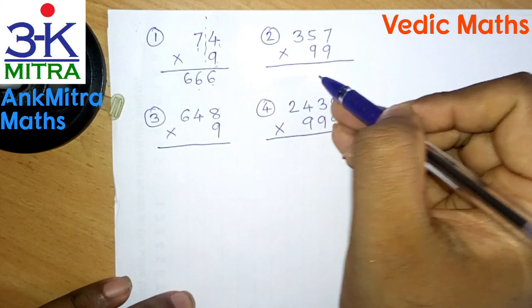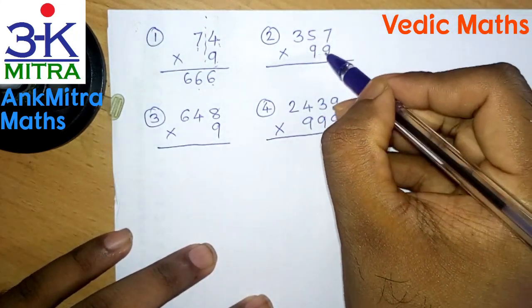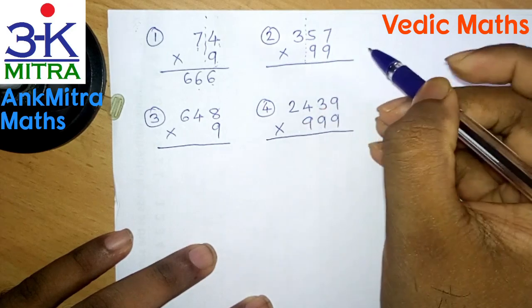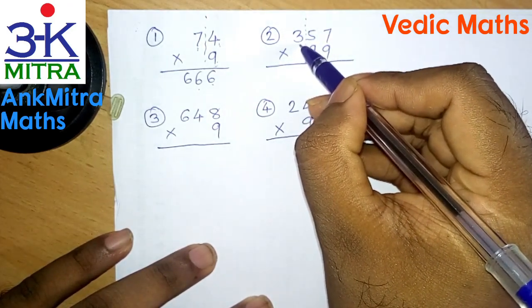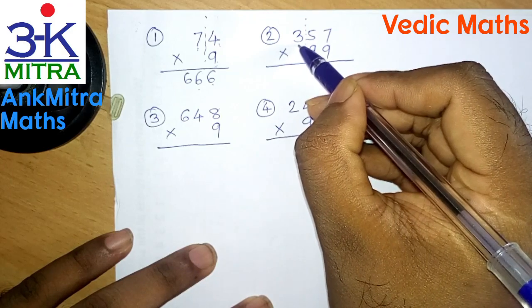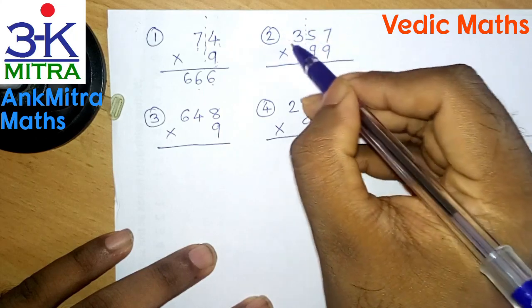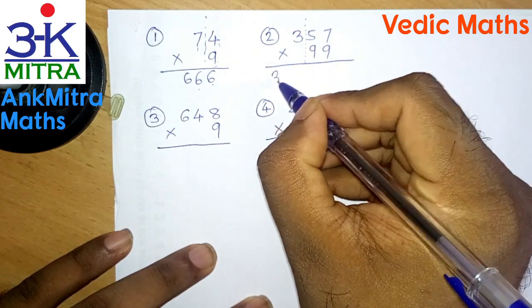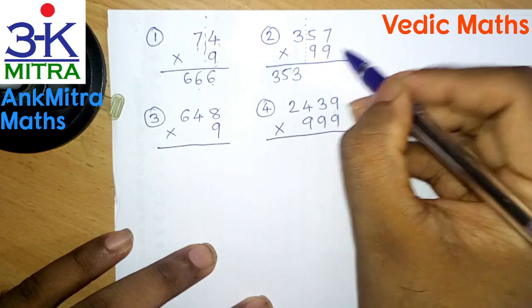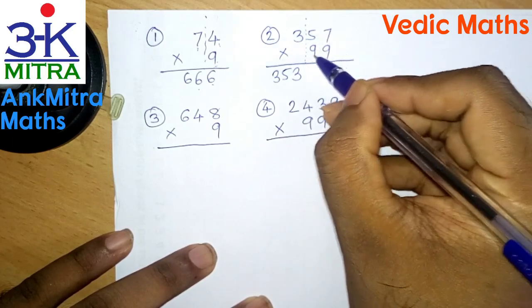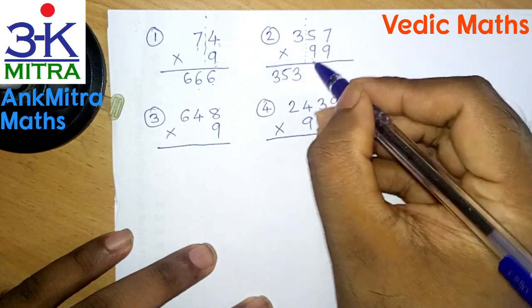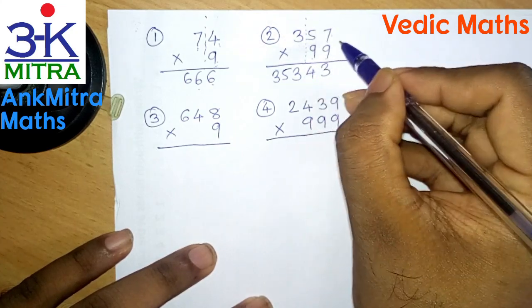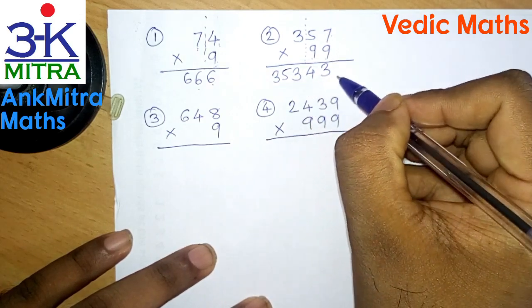Now let's look at the second example — this will clear things up more. Here we have two digits in the multiplier, so we draw a partition line next to those two digits. We have a single digit on the left of the multiplicand, which is 3. Adding 1 to that gives 4, so we subtract 4 from the entire multiplicand 357, giving us 353. For the final step, we subtract 57 from the base of 99, that is 100: 9 minus 5 is 4, and 10 minus 7 is 3. So the answer for 357 multiplied by 99 is 35,343.